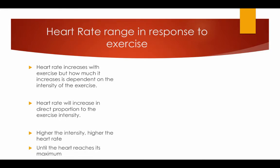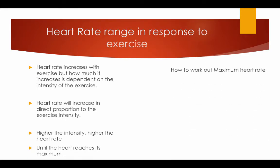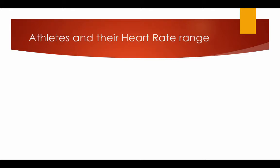Heart rate continues to rise until the heart reaches its maximum. To work out maximum heart rate: 220 (the maximum a heart can beat when we are born) minus the athlete's age equals the maximum heart rate.